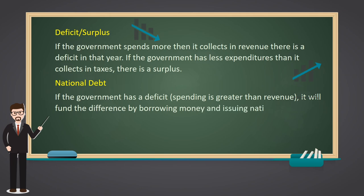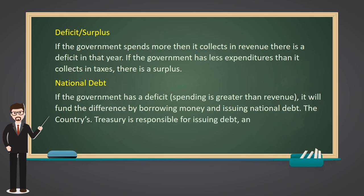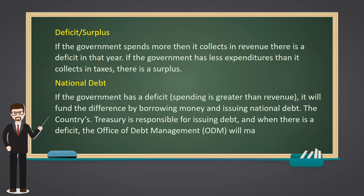The country's Treasury is responsible for issuing debt, and when there is a deficit, the Office of Debt Management (ODM) will make the decision to sell government securities to investors.